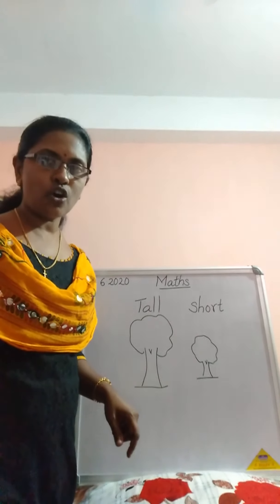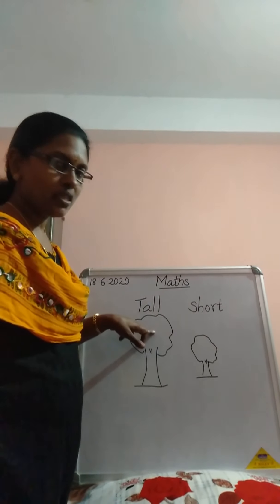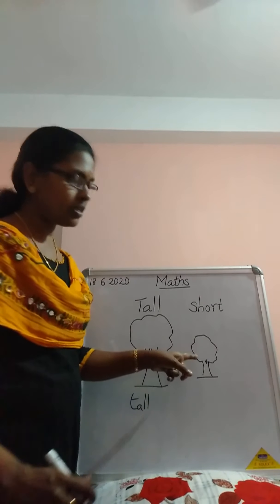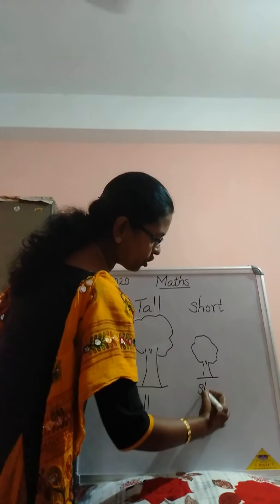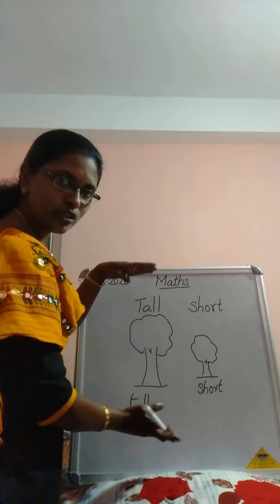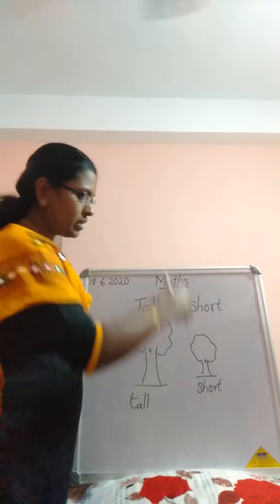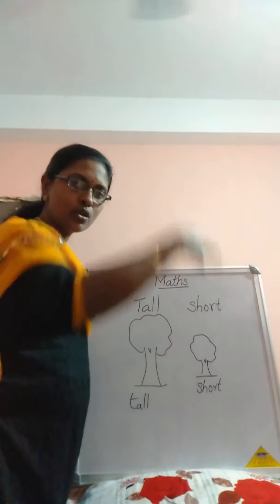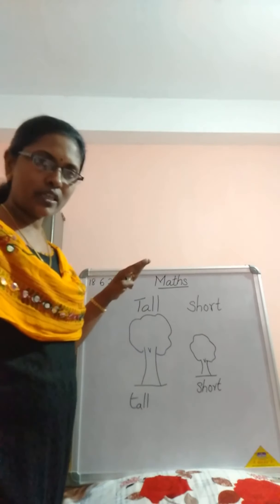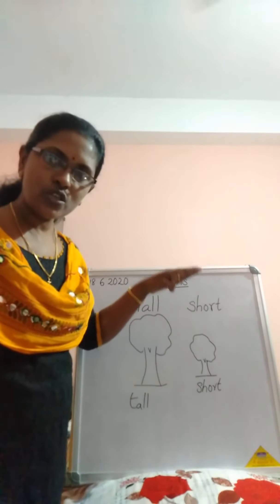Which tree is tall — this or this? Yes, this tree is tall and this tree is short. Tall, short. The first tree is tall and this tree is short. This tree is tall and this tree is short.